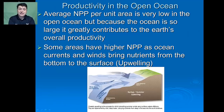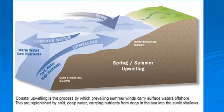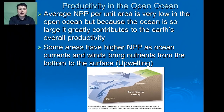The average net primary productivity per unit area of the open ocean is actually very low. Because the ocean is so large, though, it does contribute greatly to the Earth's overall productivity. Some areas will have higher net primary productivity where ocean currents and winds bring nutrients from the bottom to the surface — this is called an upwelling. When nutrients rise to the surface where light is present, organisms can increase greatly in number, providing the basis for the food chain, and we typically find many fishing opportunities in these areas.